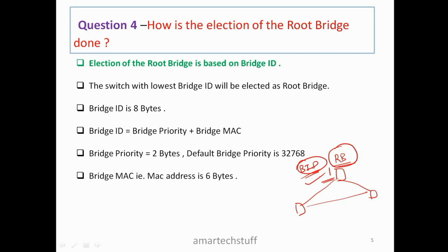So the bridge ID is a combination of bridge priority and bridge MAC address — 2 plus 6 equals 8 bytes total. Always remember: the election of the root bridge depends upon the bridge ID, and the switch with the lowest bridge ID will be elected as the root bridge.